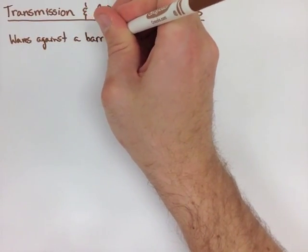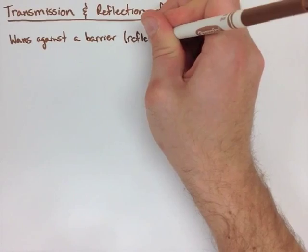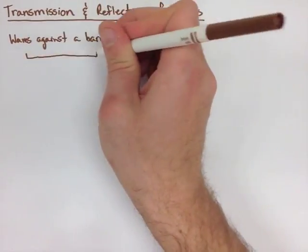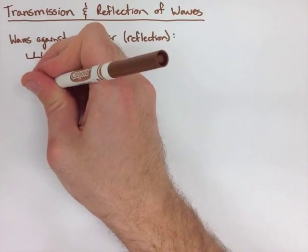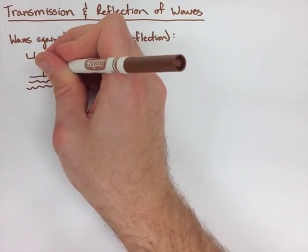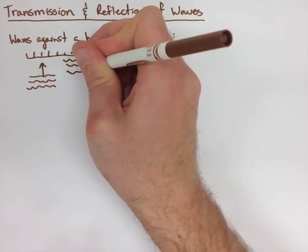So, when we have waves going against a barrier, they have a reflection. If a wave goes against a wall straight on at 90 degrees, it's going to go straight in and then bounce straight back out.